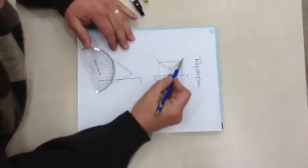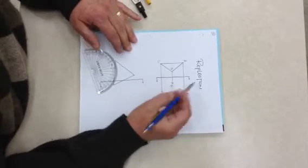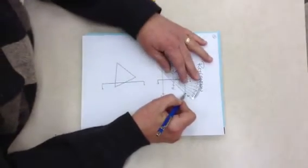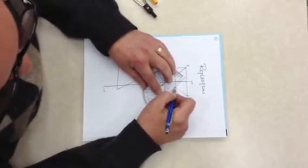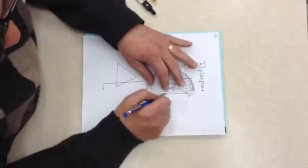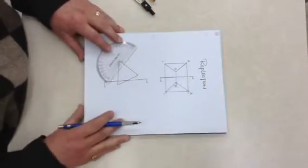The original goes from A to B, B to C, C back to A. So I join this up the same way. A to B, B to C, and C back to A. And then you end up with a perfect reflection of what you started with.